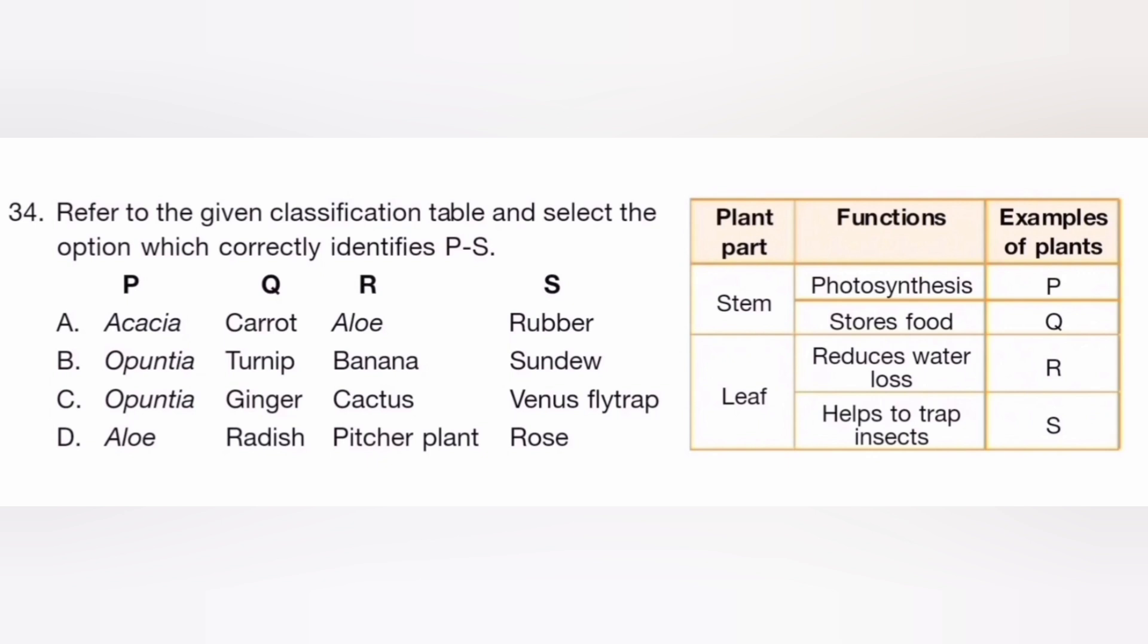Refer to the given classification table and select the option which correctly identifies P and S. The answer is C.